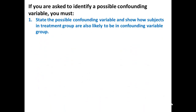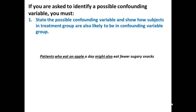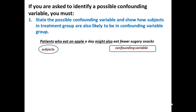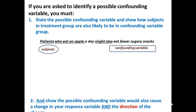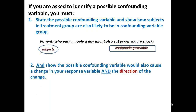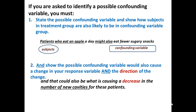If you're asked to identify a possible confounding variable, you must state the possible confounding variable, show how subjects in the treatment group are also likely to be in the confounding variable group, and show that the possible confounding variable would also cause a change in your response variable — stating the direction of that change. The key is to explain how it is linked to both the explanatory variable and the response variable in a way that also explains the observed association.